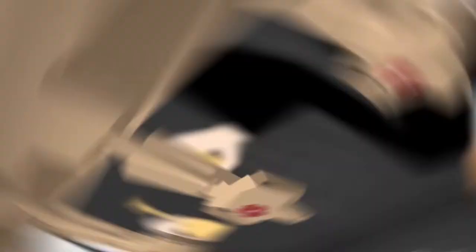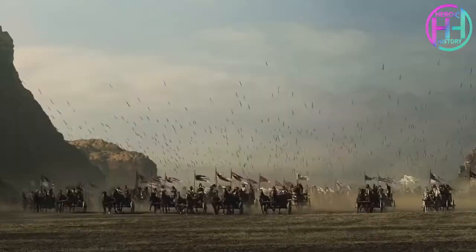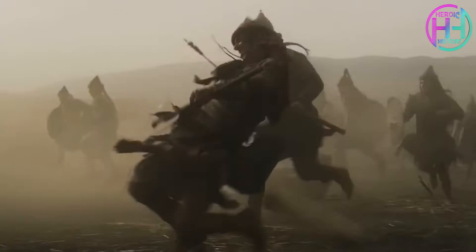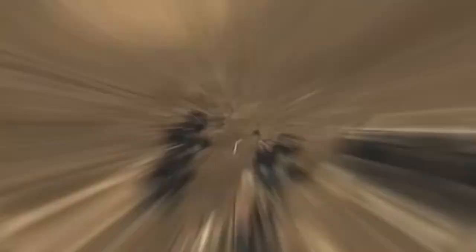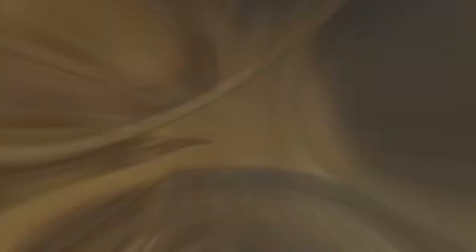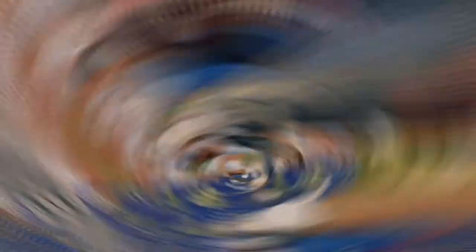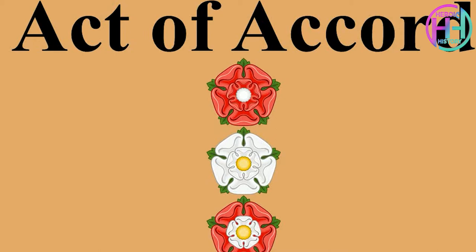In June 1460, Warwick, Salisbury, and Edward, son of Richard, crossed the English Channel and established themselves in Kent and London, where they enjoyed strong support. The two armies faced each other at the Battle of Northampton. Though victory looked unlikely for the Yorkists, one of Henry's commanders was a turncoat who allowed Warwick's men access to the King's forces. The Lancastrian army was routed, and Henry was found alone in his tent having suffered another fit of madness. With this victory, Richard tried to claim the throne but even his allies opposed him, so instead he proclaimed himself and his heirs as Henry's successors — the Act of Accord, passed by Parliament.